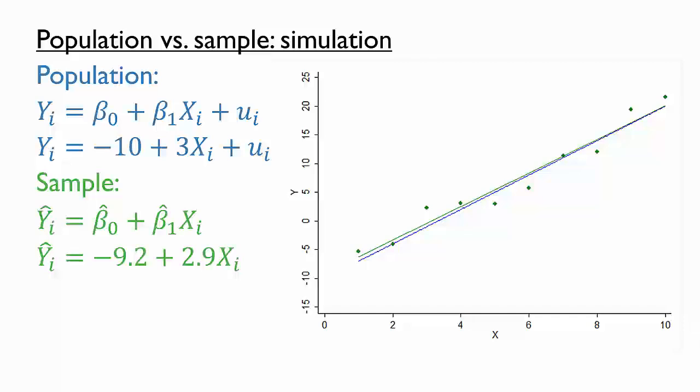Now let's use the same data generating process to create additional samples of x and y, and then fit a best fit line to each one.